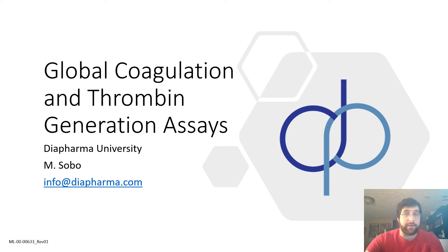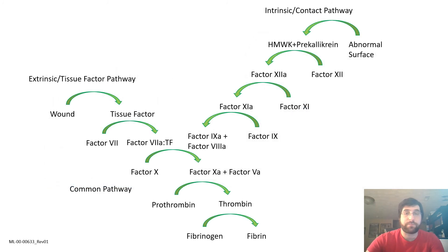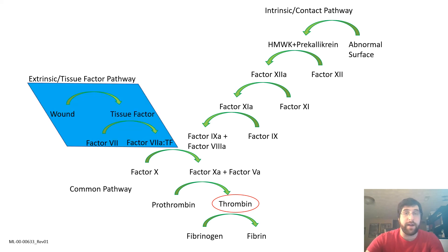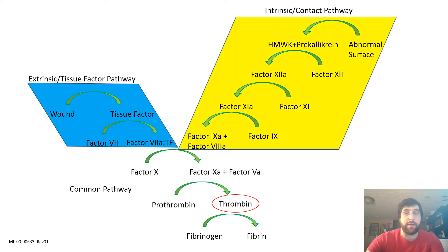First, a little background on coagulation where active thrombin is generated. Simply put, coagulation is the body's way of plugging holes in the vasculature and stopping bleeding using fibrin and platelets. As we can see, thrombin is here at the penultimate step just before the actual formation of fibrin. Two different enzymatic cascades exist: the tissue factor or extrinsic pathway, and the contact or intrinsic pathway.